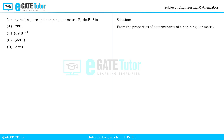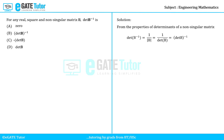From the properties of determinants of a non-singular matrix, determinant of B inverse is equal to 1 by determinant of B, which is nothing but determinant of B whole inverse. So the answer for this question is option B.